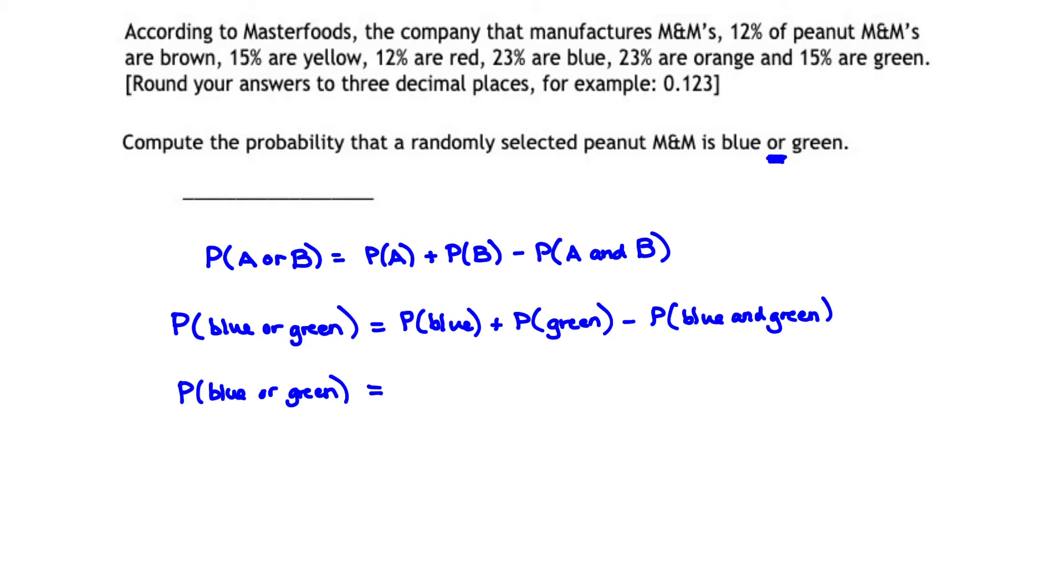First, we have to look for the probability that the M&M is blue. We're told there's a 23% chance that the M&M is blue, so we write that as 0.23.